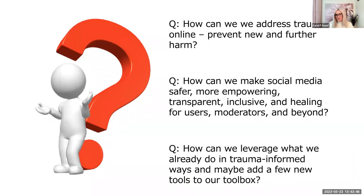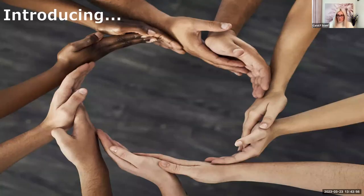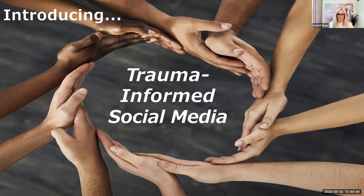So at this point, you might be wondering: if trauma is so pervasive and impactful, what can we do? How can we do better? My co-authors and I believe that a trauma-informed approach to social media might be the answer. We focus on the three most prominent components of the social media ecosystem: design, moderation, and the companies themselves.